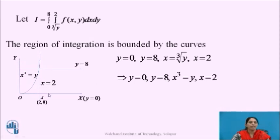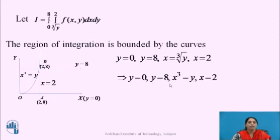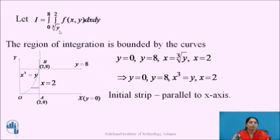The line x equals to 2 intersects the x-axis at the point A, whose coordinates are (2, 0). The curves y equal to 0 and y equals to 8 bound the region of integration. As x is expressed as a function of y, the initial strip is parallel to the x-axis. The lower end of the strip is on the curve x cube equals to y, and the upper end is on the curve x equals to 2. So the region of integration is OAB.